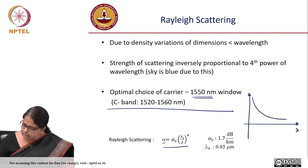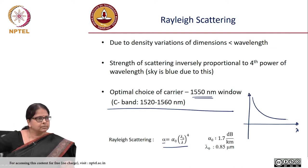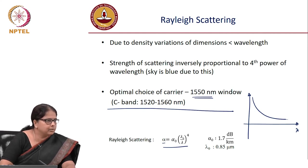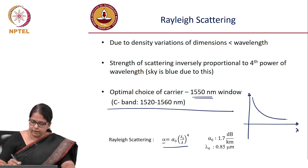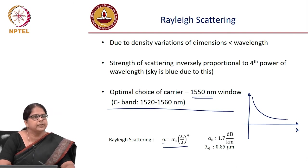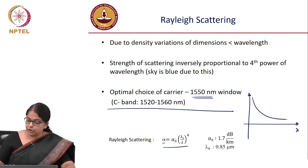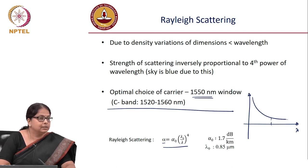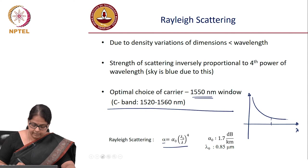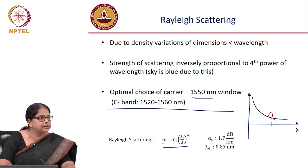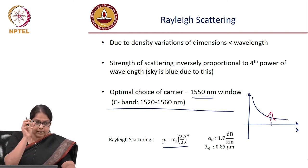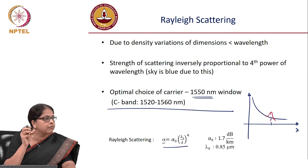Can scattering loss decrease indefinitely, suggesting we should use the longest possible wavelength? The reason 1550 nm is optimal is that losses do not decrease forever. Hydroxyl (OH) absorption creates a bump in the loss curve around 1300 nm, corresponding to the resonant frequency of OH.